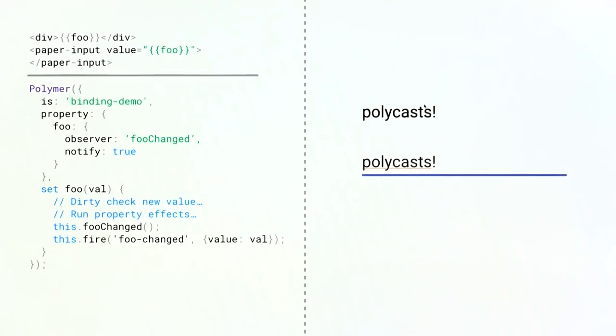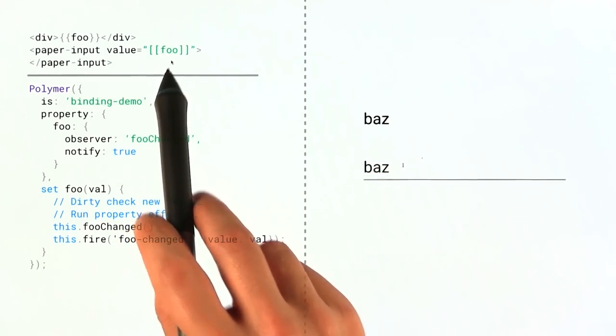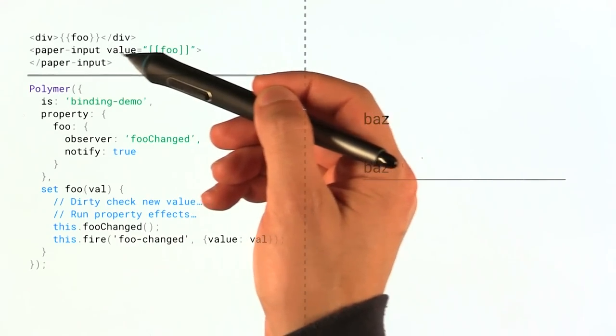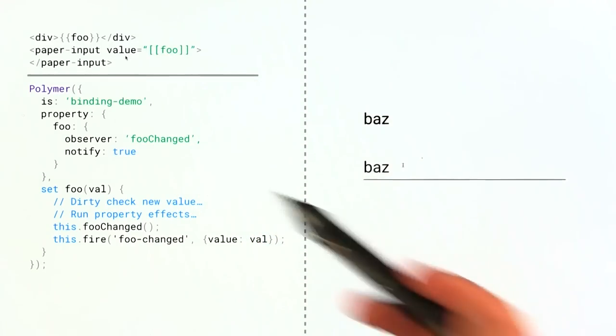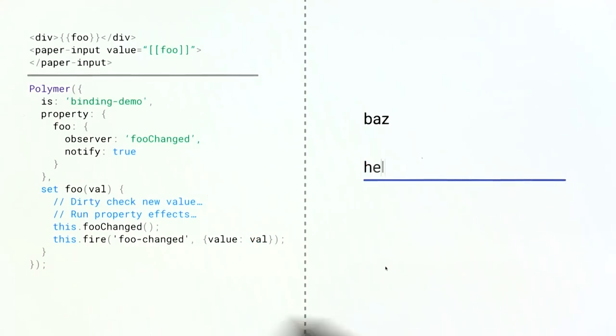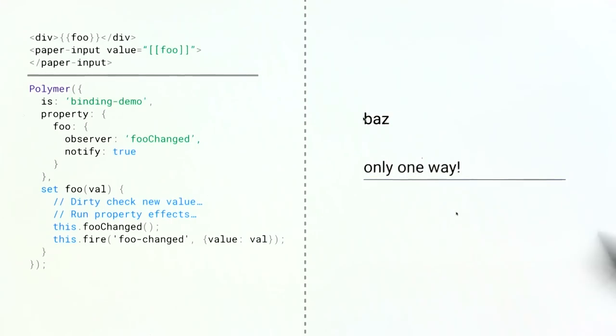But what if I'm using a one-way binding, right? So here I'm using square brackets now instead of the curly braces. Well, that just tells Polymer, hey, don't set up the event listener for value changed. That's really all that happens there. So now I go in, I type in this input field, and because I'm not listening for those events, I don't hear anything. And this property up here remains what it always was. So we're not pushing any new data up there.